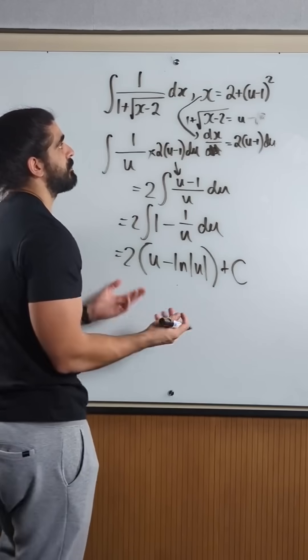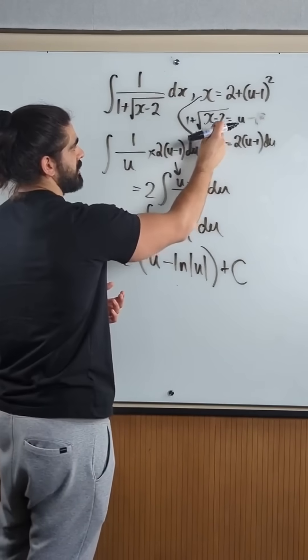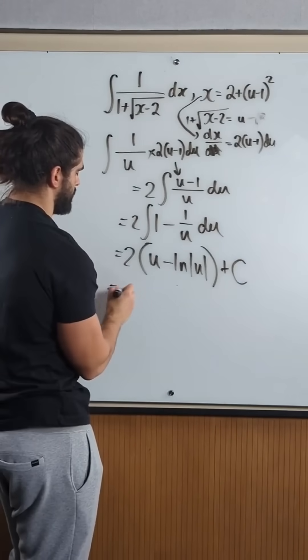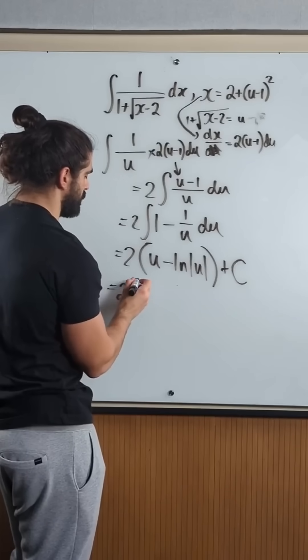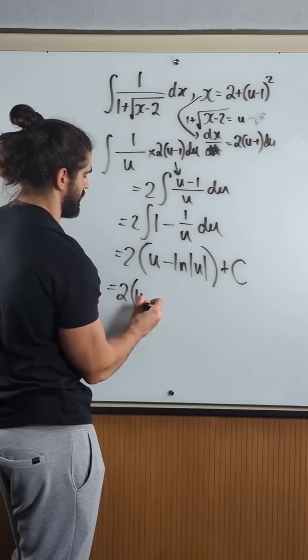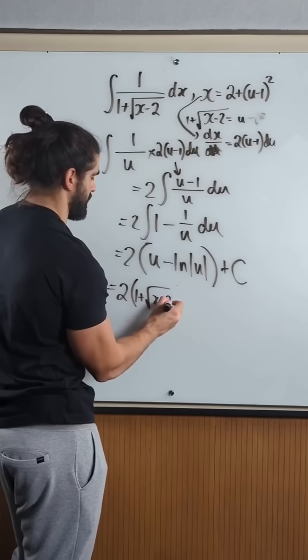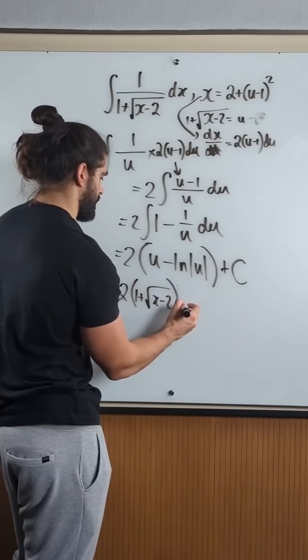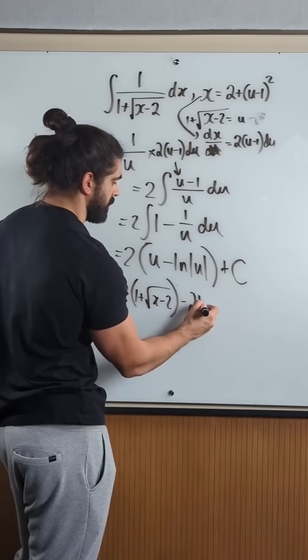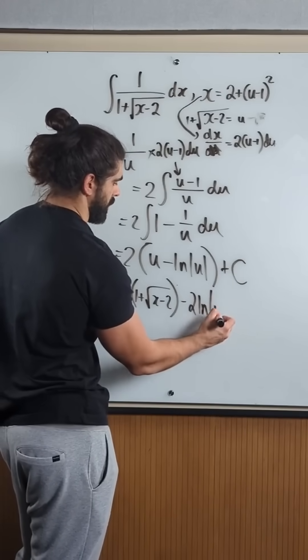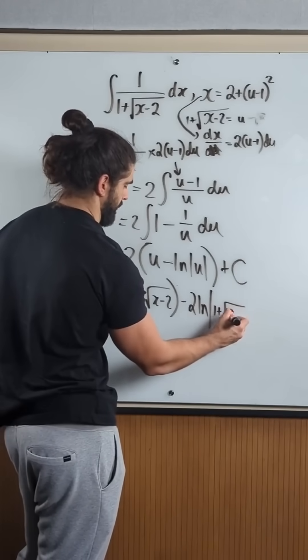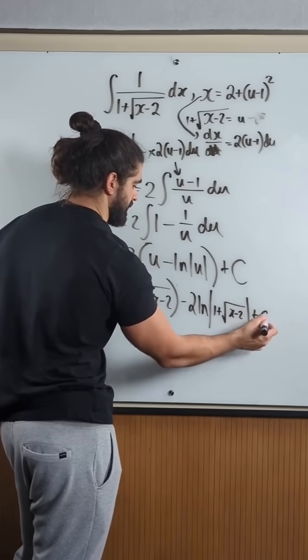Expand the 2 in and then replace u with this, right? I mean, we've done the rearranging already, so we get 2u, u is this 1 plus root x minus 2, minus 2 ln of 1 plus root x minus 2 plus c.